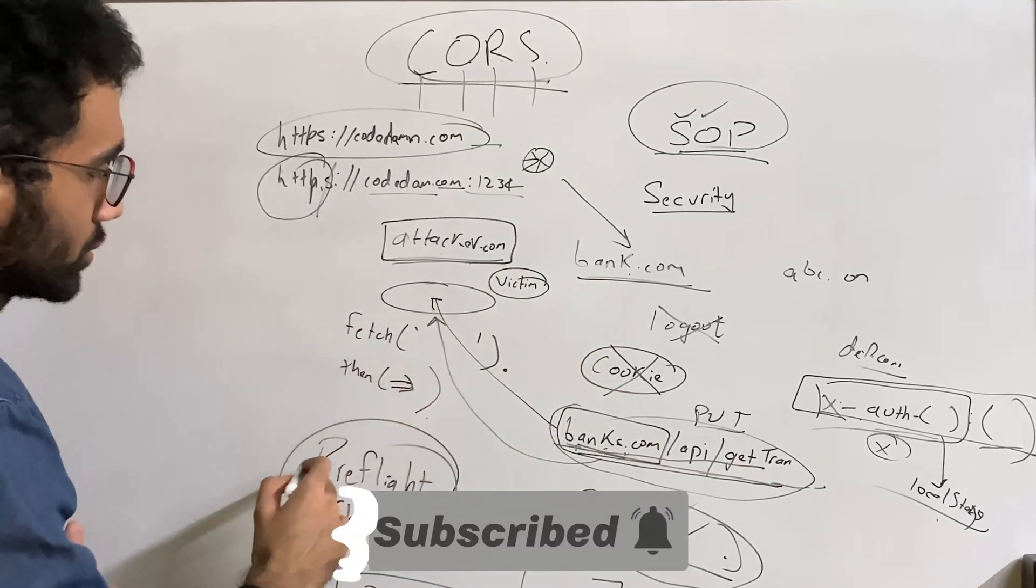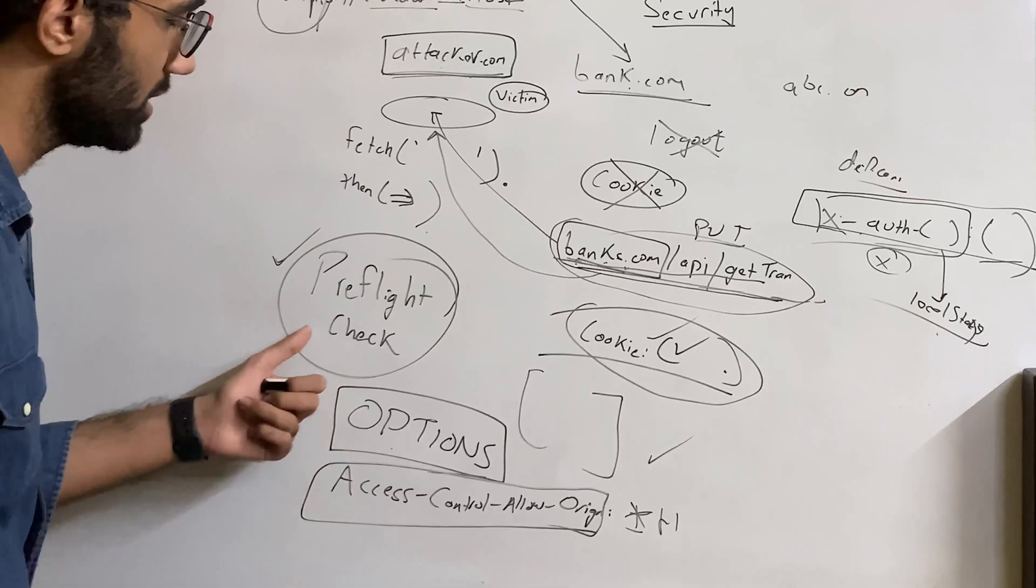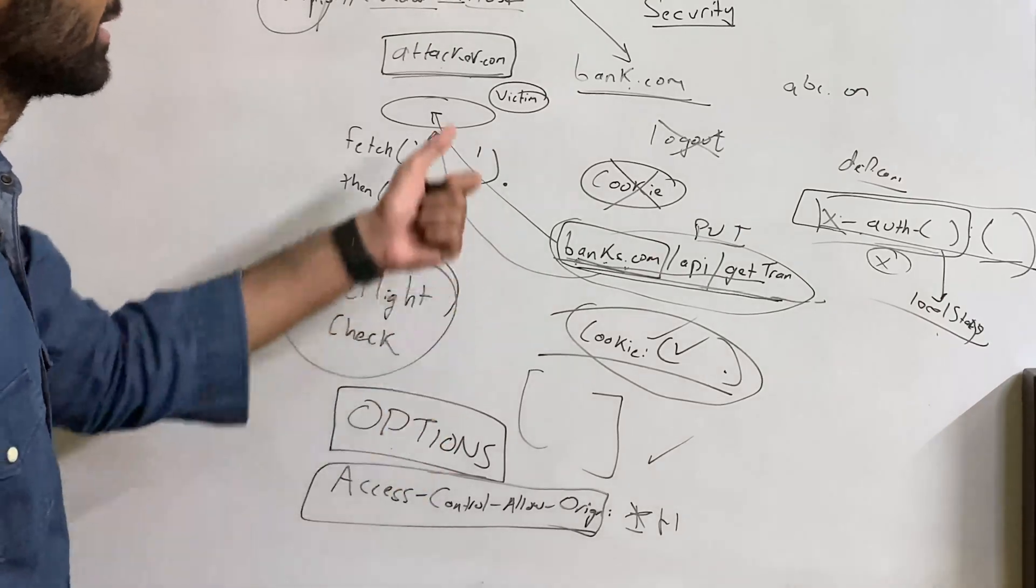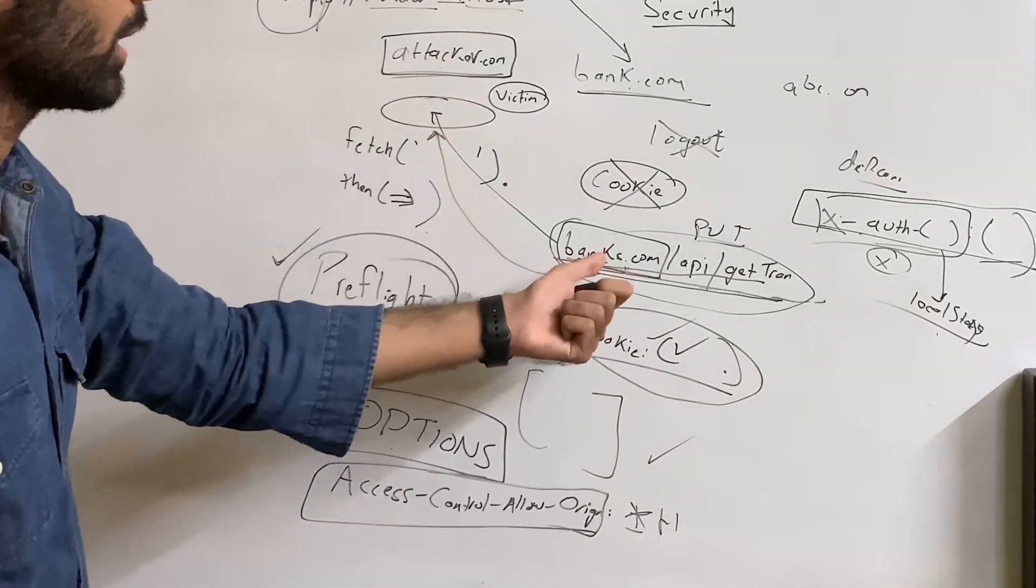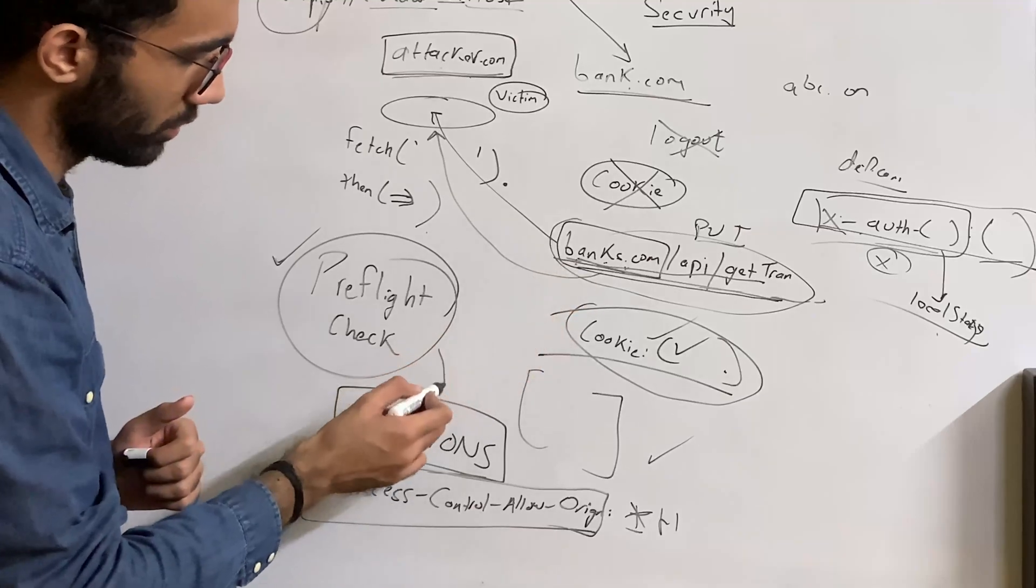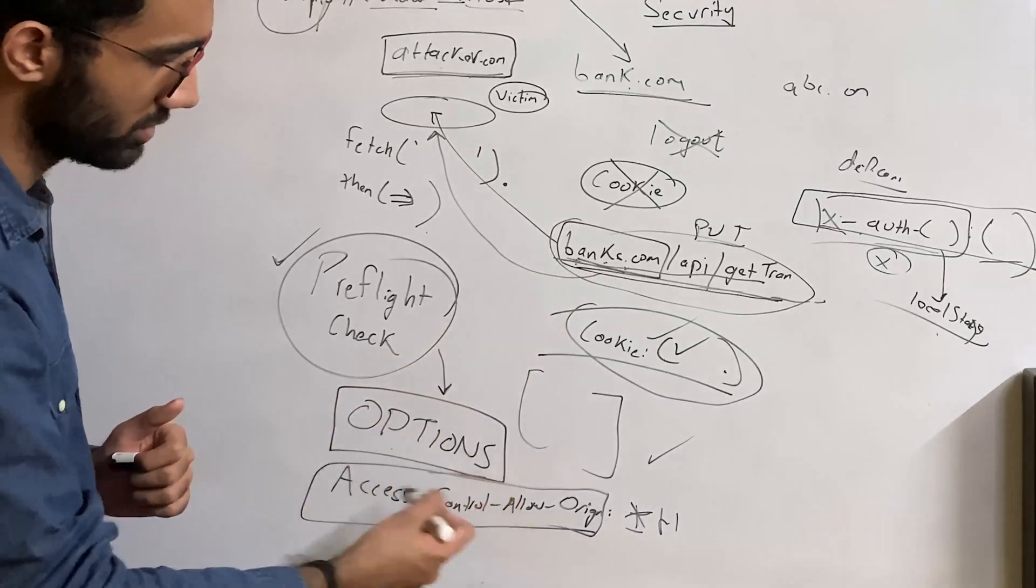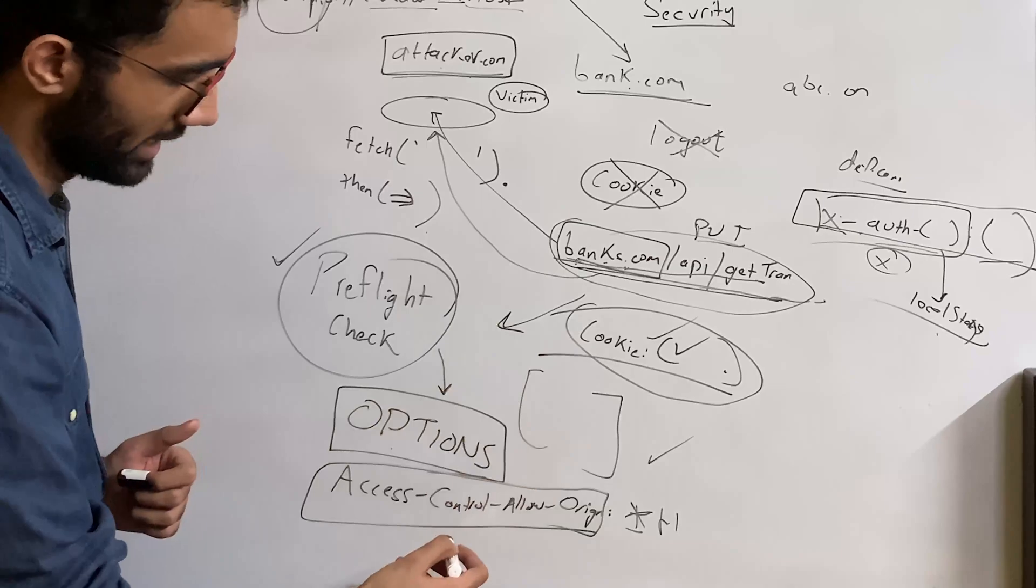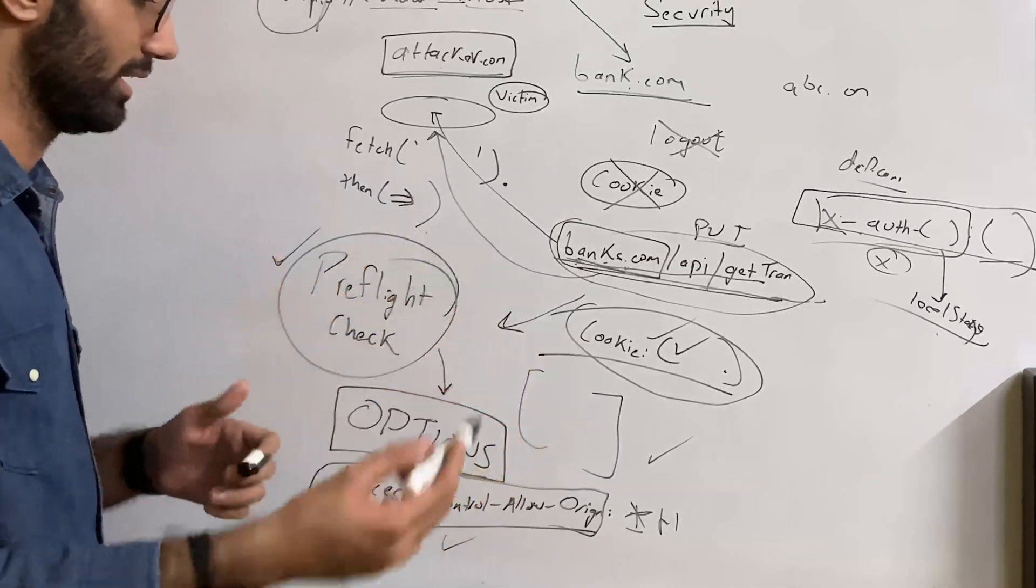Browsers do a preflight check. That is, they would actually check if you are even allowed, if this attacker is even allowed to make this request. It goes to this URL with the method of options, gets the data which is the header and the allowed methods and stuff like this, and depending on that blocks this request or lets it go depending on what the end server says.